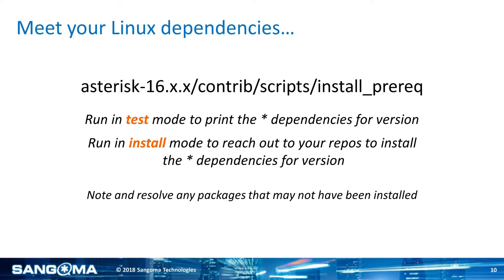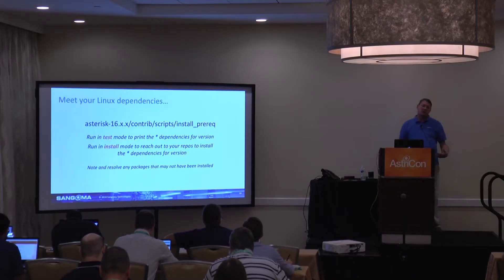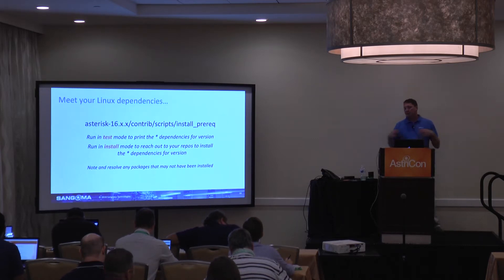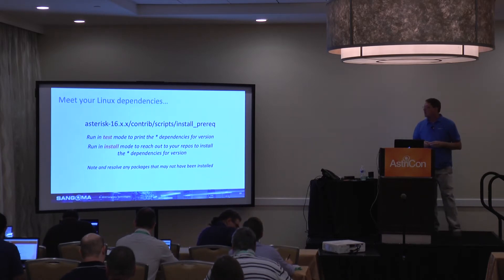First, make sure you have all the dependencies on your Linux server required for Asterisk. When you download the Asterisk tarball and untar it, within that directory there's a script called install_prereqs. What that'll do is — if you're on CentOS it'll go out and get all the RPM packages required for Asterisk; if you're on Ubuntu it'll get the DEB packages required, and it'll either install them or just give you a list.